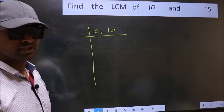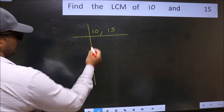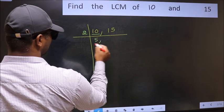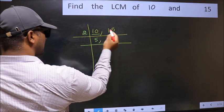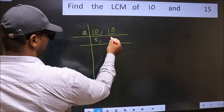Now you should focus on the first number, which is 10 here. 10 is 2 times 5. The other number, 15, is not divisible by 2, so you write it down as it is.